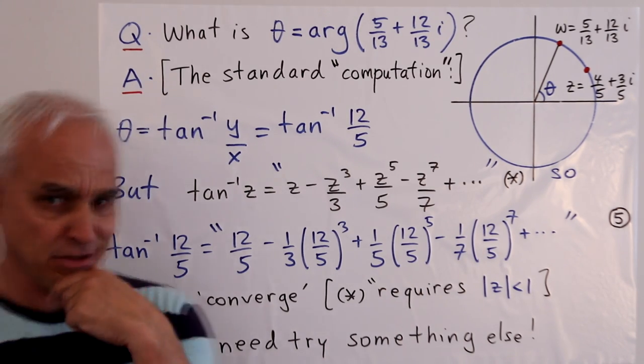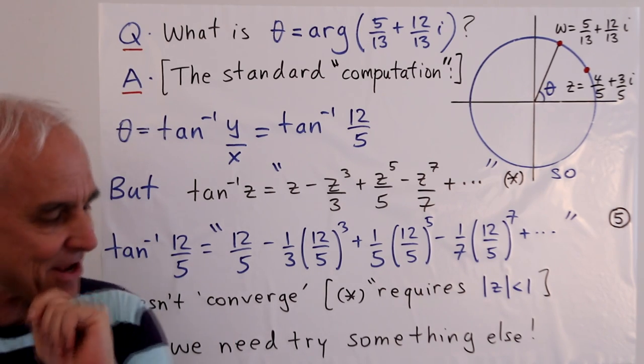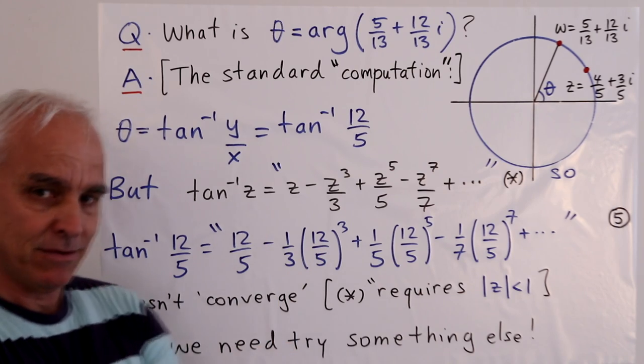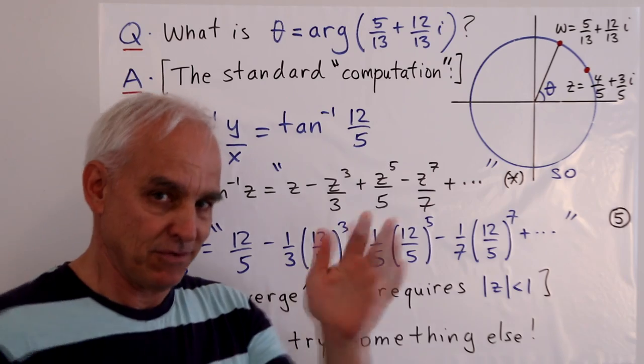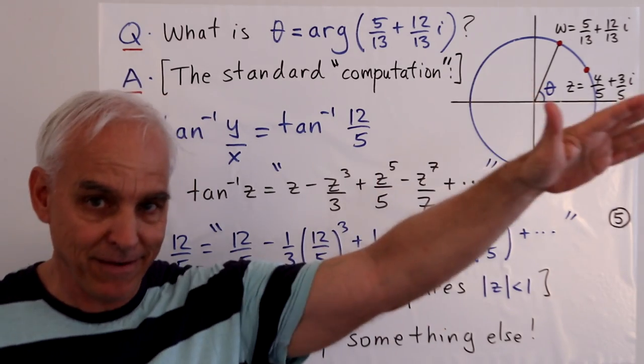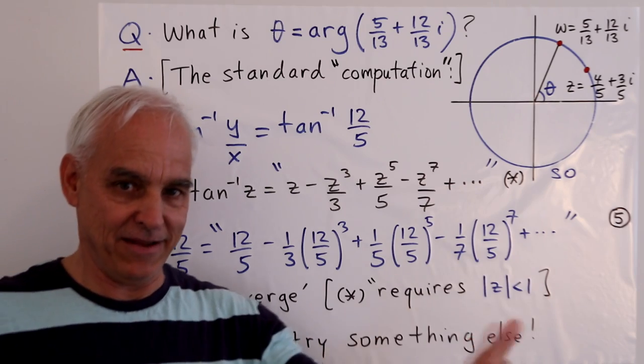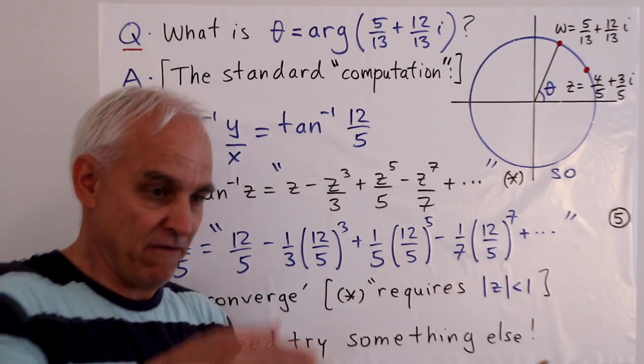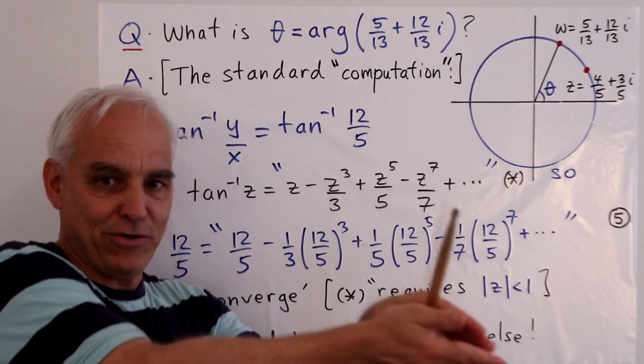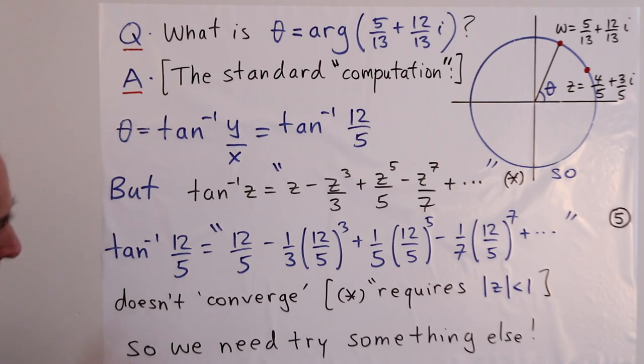But if the undergraduate stares at this for a second, they will realize, wait a minute, something's not quite right, because 12/5 is bigger than 2. And so these powers, these are powers of 2, they're getting big. We're dividing but by something that's not getting as big as fast. So this thing is going to kind of blow up. It's not going to converge, get smaller and smaller as we would like.